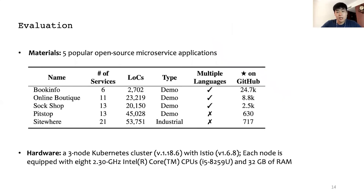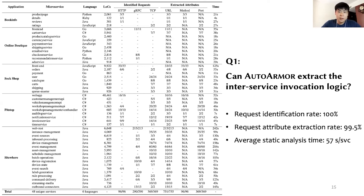We evaluated AutoArmor with five popular open-source microservice applications, including 64 services developed in six programming languages. The first question is: can AutoArmor extract the inter-service invocation logic? The effectiveness of request extraction is indicated by two metrics: whether it can identify the invocations in the code, and whether it can extract the detailed attributes of them. The result shows that for 755 requests, the identification rate is 100%, and the attribute extraction rate is 99.5%. Besides, since AutoArmor reduces the search space for static analysis, the average analysis time for each microservice is only 57 seconds.